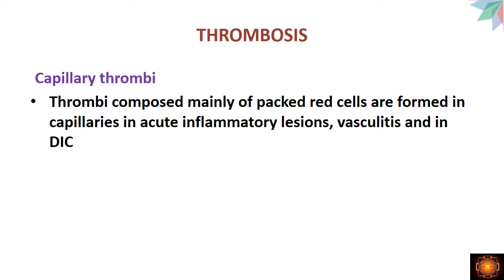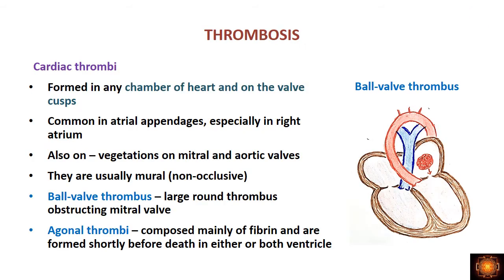Capillary thrombi are thrombi formed in small vessels and capillaries. They are mainly formed by packed red cells and are usually seen in acute inflammatory lesions, in vasculitis, and in DIC (disseminated intravascular coagulation).